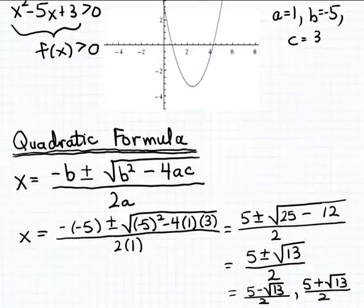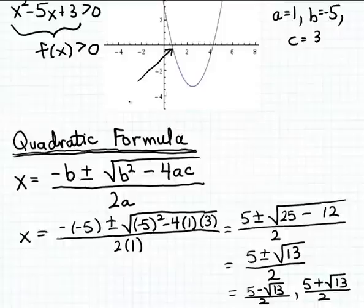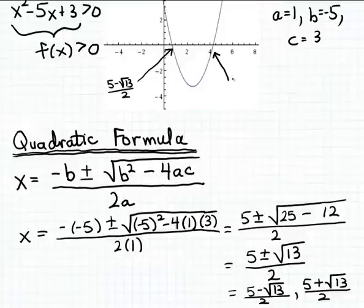Let me scroll down and show you what these two x-intercepts are. I've substituted the coefficients a, b, and c into the quadratic formula and simplified. When you carry out this substitution and simplification, you end up with these two solutions to the quadratic equation — the two x-intercepts for the function f. The smaller one is 5 minus the square root of 13, all over 2. The larger one is 5 plus the square root of 13, all over 2. So the left x-intercept is (5 minus √13)/2, and the right x-intercept is (5 plus √13)/2.